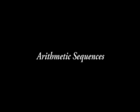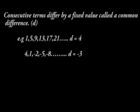Arithmetic sequences. Consecutive terms differ by a fixed value in arithmetic sequences. This fixed value is called a common difference, abbreviated D. 1, 5, 9, 13, 17, 21, D is equal to 4. For the second sequence, D is minus 3.